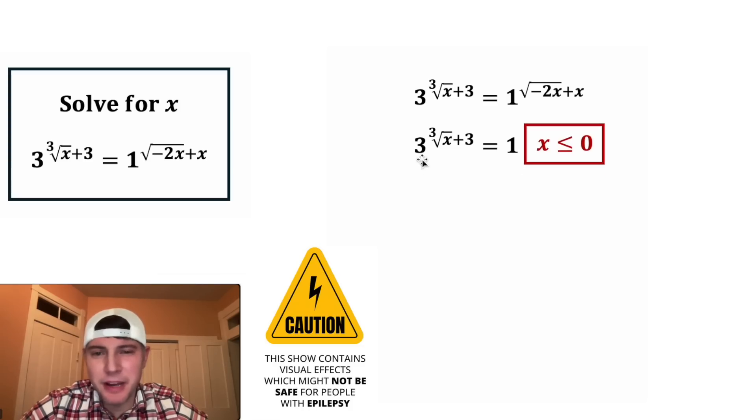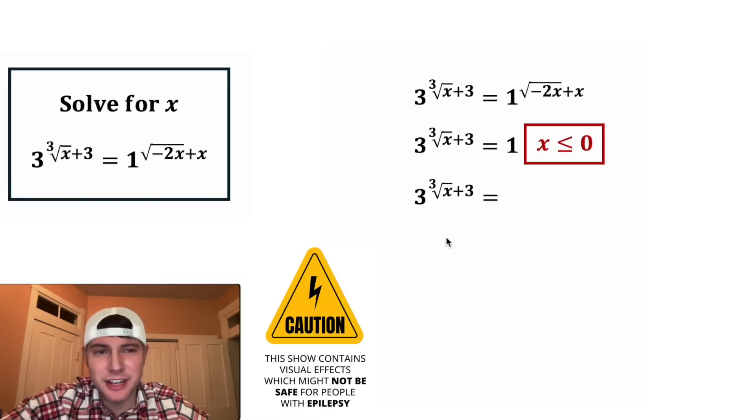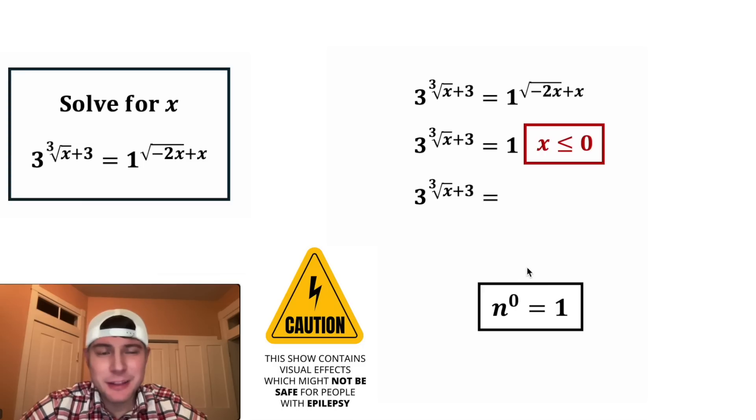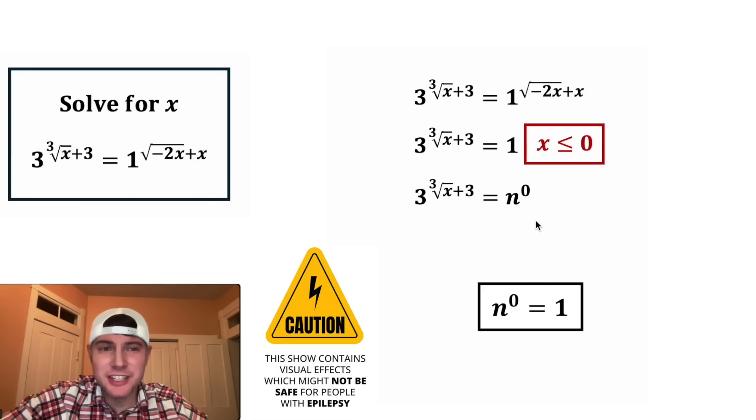Now for the next step, I think this is gonna be easiest if we can give these two the same base. Let's leave the left-hand side alone. And on the right-hand side, we can use these notes. Anything to the power of 0 is 1. So we can rewrite this 1 as n to the power of 0. And now we can change this n into anything we want. Let's change it into 3.